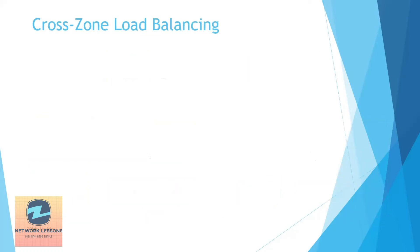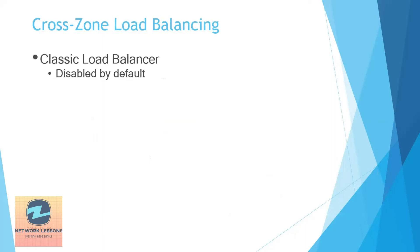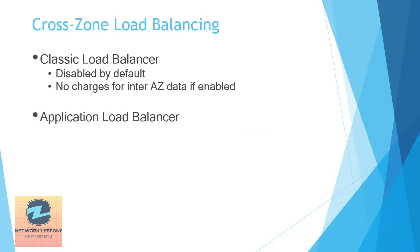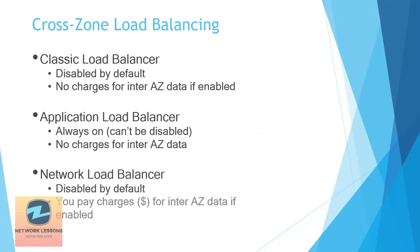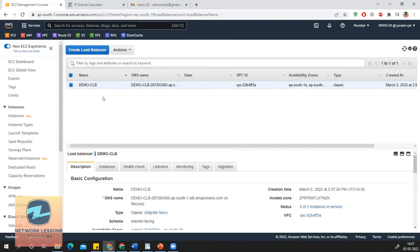On the next slide: for the Classic Load Balancer, cross-zone load balancing is disabled by default, and no charges apply if you enable it. For the ALB, it is always on — you cannot disable it, and there is no charge. For the NLB, it is disabled by default, and if you enable it, you will be charged separately for inter-AZ data traveling between AZs.